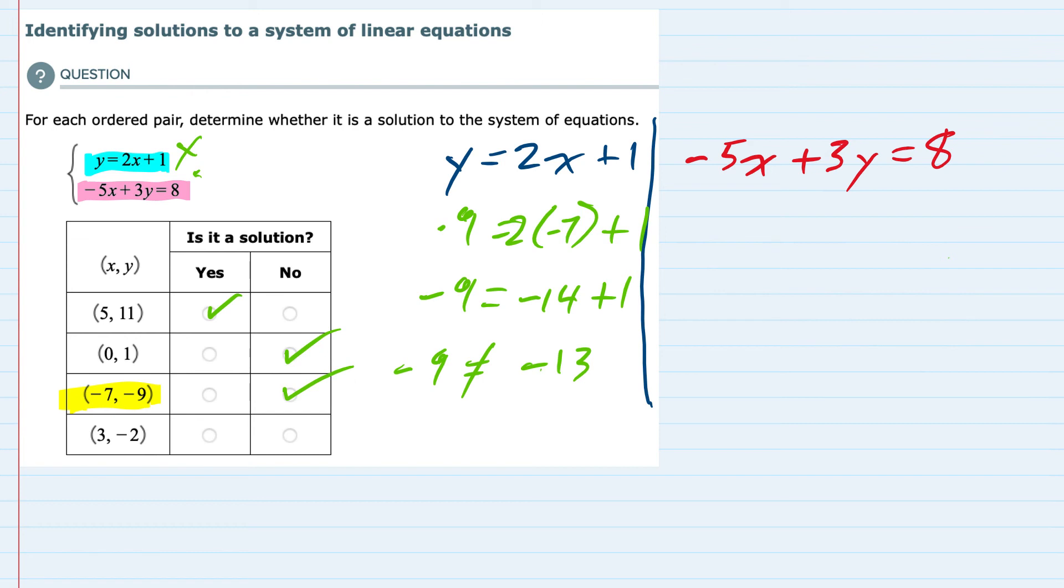And moving on to the last point, here we have (3, -2). So negative 2 is our y value and 3 is our x value. In the first equation, this is negative 2 on the left hand side and 6 plus 1 on the right hand side. 7 is not equal to negative 2.